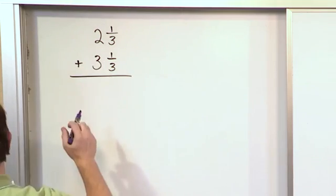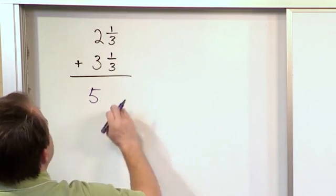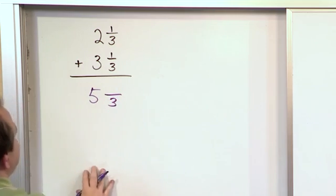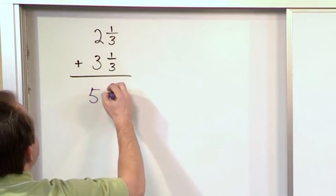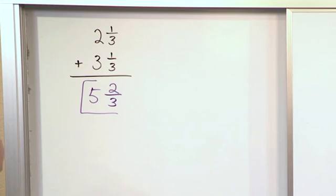If we add the whole numbers together, 2 plus 3 is going to give me 5, and then we want to add the fractions together. Well, we already have a common denominator, so the 3 can remain because it's common, and then 1 plus 1, we can add the numerators as we have always been doing, is 2. And the answer to this guy is 5⅔.